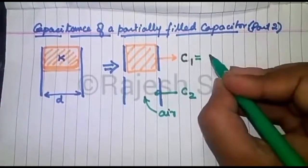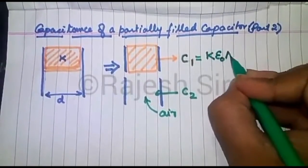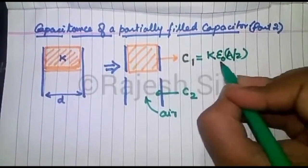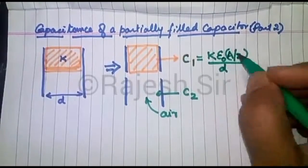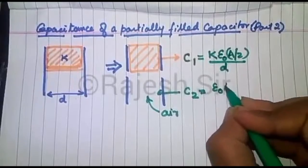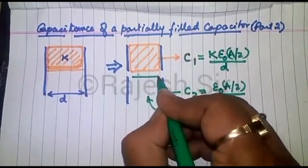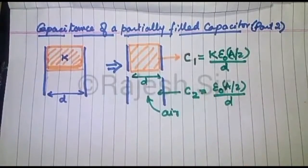So the capacitance of the first capacitor now happens to be k epsilon naught, area has been reduced to half, so A by 2, and the distance between the plates being d. While the capacitance of the second capacitor will be epsilon naught A by 2, and the distance still remains the same as d. This distance is d for both the capacitors.